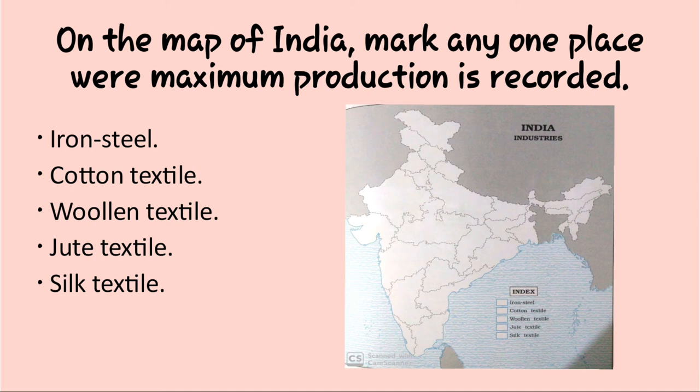Maximum iron and steel is manufactured at Jamshedpur. We are supposed to mark Bhilai, Rourkela, Howrah, Durgapur, and Bokaro — these are the places where maximum iron and steel production is done in our country. Now come to the wool and textile industry.